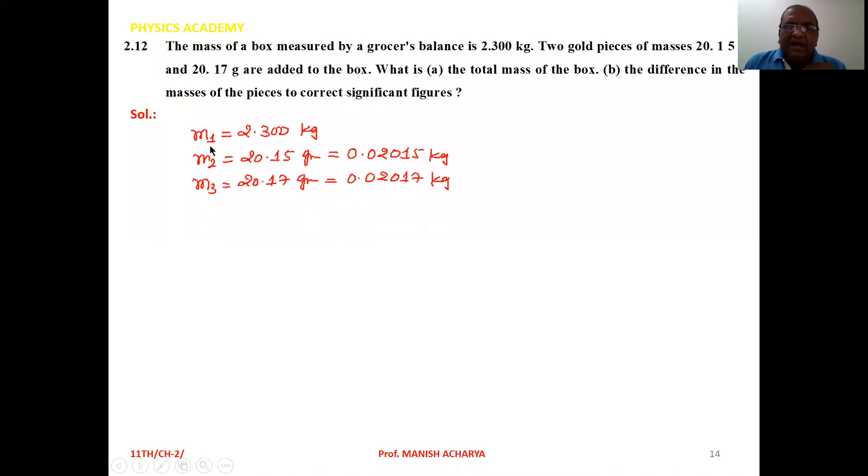Now mass m1 is 2.300 kg, mass m2 is 20.15 g, which is 0.02015 kg. Mass m3 is 20.17 g, which in kg is 0.02017 kg. So total mass,